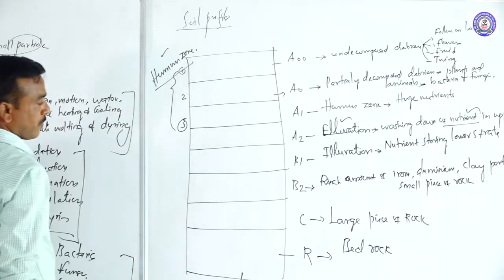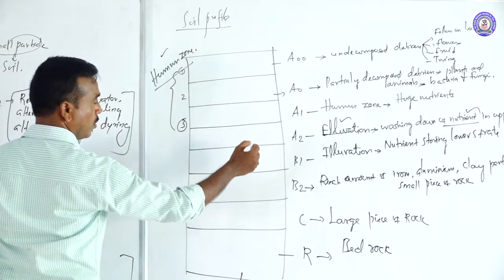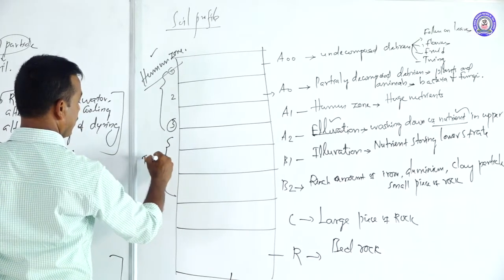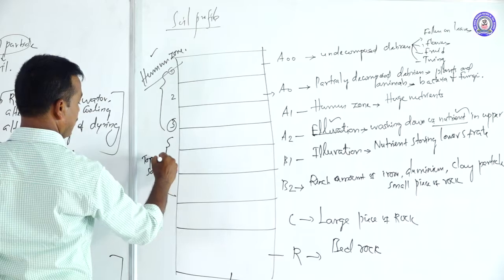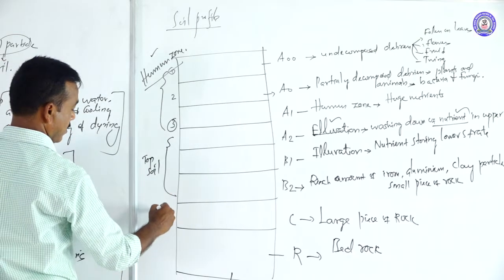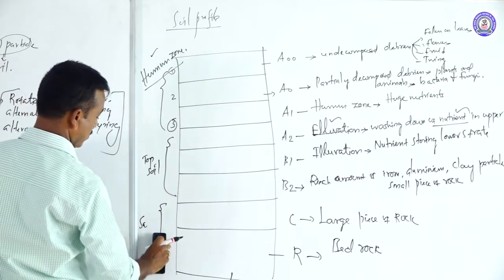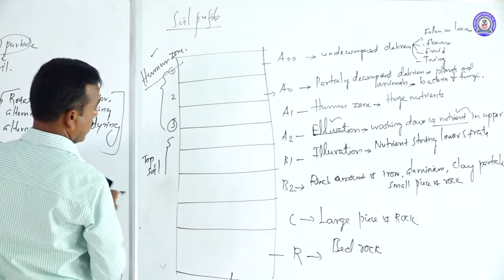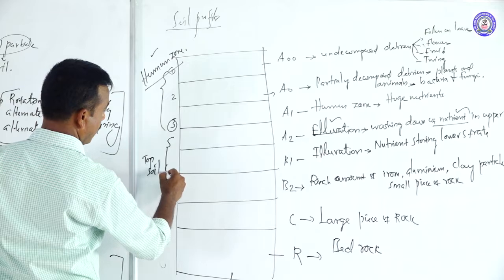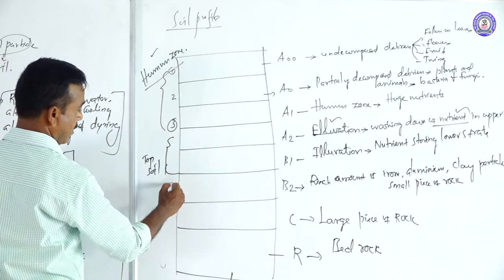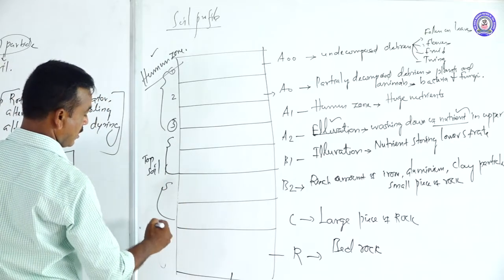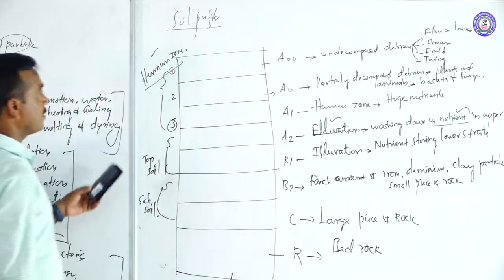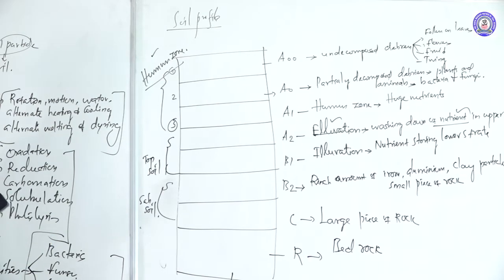A00, A0, and A1 are commonly called the humus zone. A2, B1, and C are commonly called topsoil. B2 and C are commonly called subsoil. This is the soil profile.